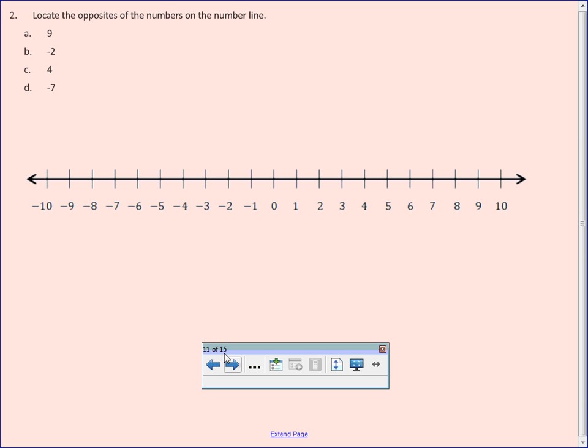So, they want us to locate the opposites of the numbers on the number line. So, what's the opposite of 9? Negative 9. So, that's A. What's the opposite of negative 2? 2. So, that's B. What's the opposite of 4? Negative 4. So, that's C. What's the opposite of negative 7? 7. So you should have the number line labeled, lettered, identified, marked up. You ready?